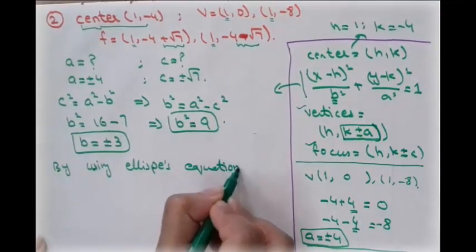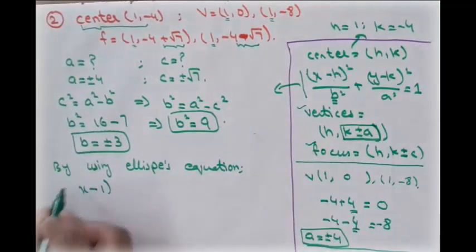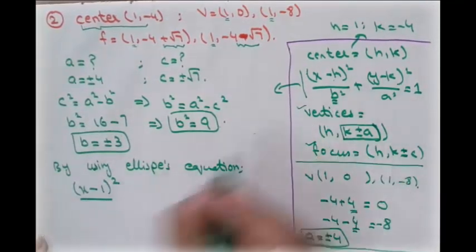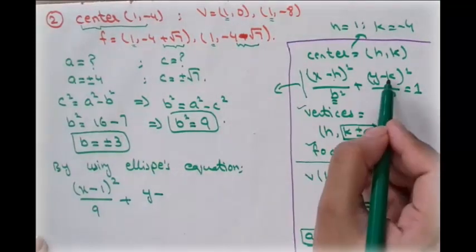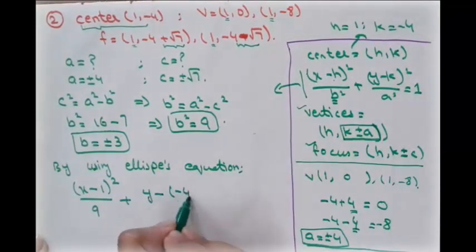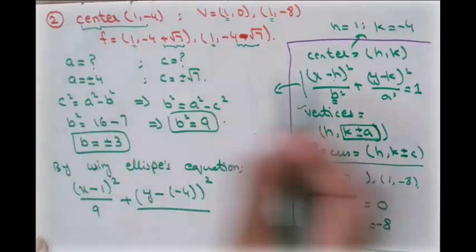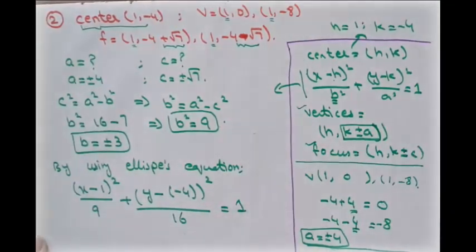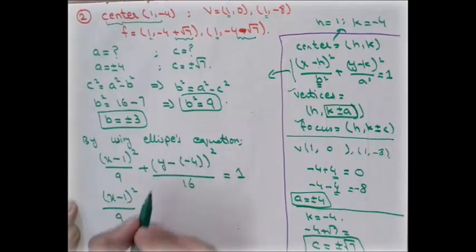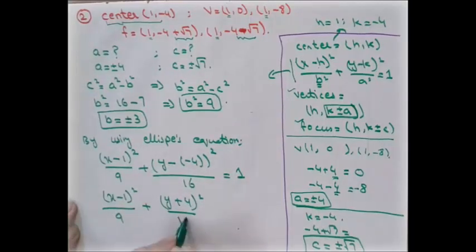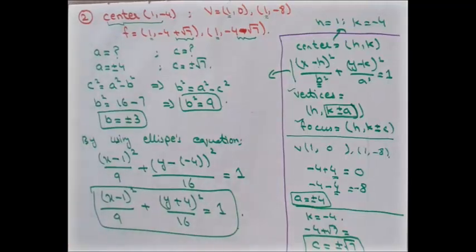Substituting all values into the ellipse equation: (x−1)²/9 + (y−(−4))²/16 = 1, which simplifies to (x−1)²/9 + (y+4)²/16 = 1. This is our final equation of the ellipse for the second example.